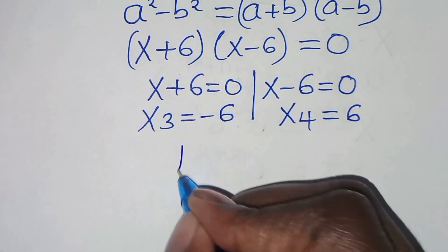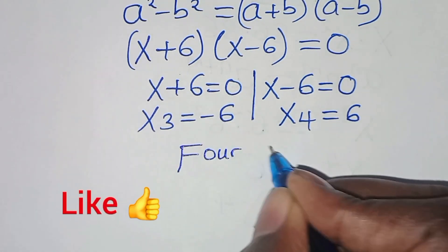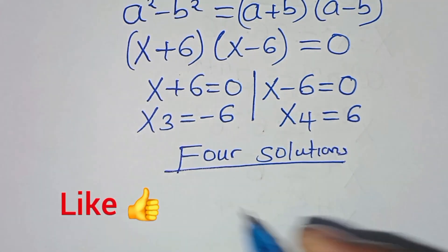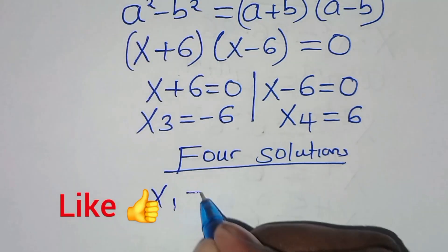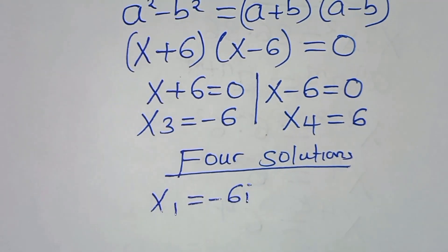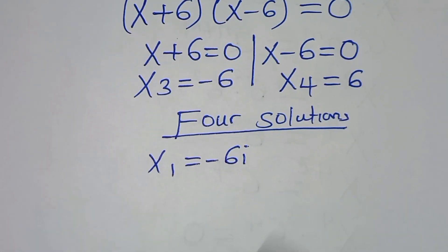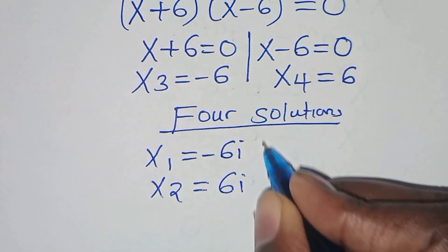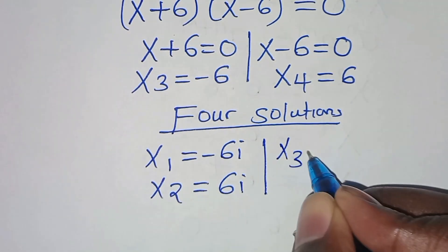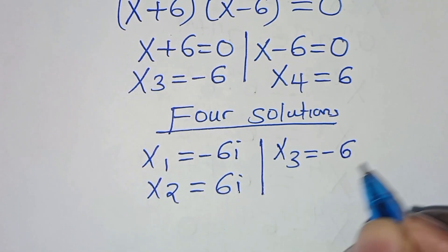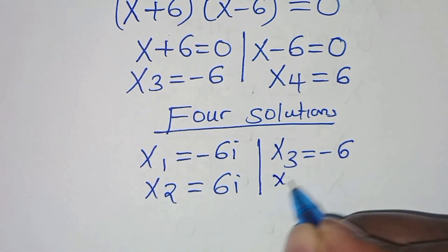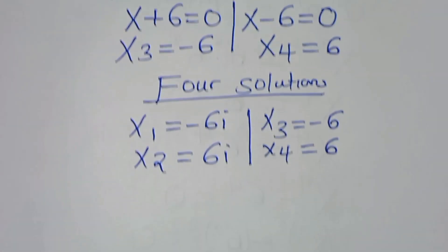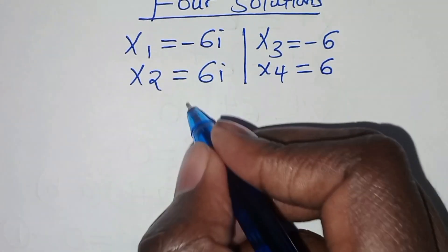So we have four solutions: x₁ equals minus 6i, x₂ equals 6i, x₃ equals minus 6, and x₄ equals 6. The next step is to verify that these four solutions satisfy the original equation.